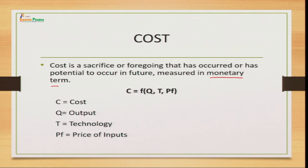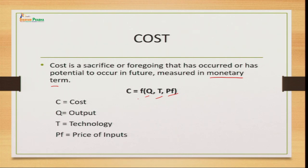Looking at the cost function, cost is a function of Q (quantity), T (technology), and the price of input factors. The more quantity there is, the more cost there will be. Cost is also affected by technology — the better the state of technology, the lesser the cost. And if input prices are high, cost will also be higher. So the cost function can be written as: Cost = f(Q, T, price of inputs).